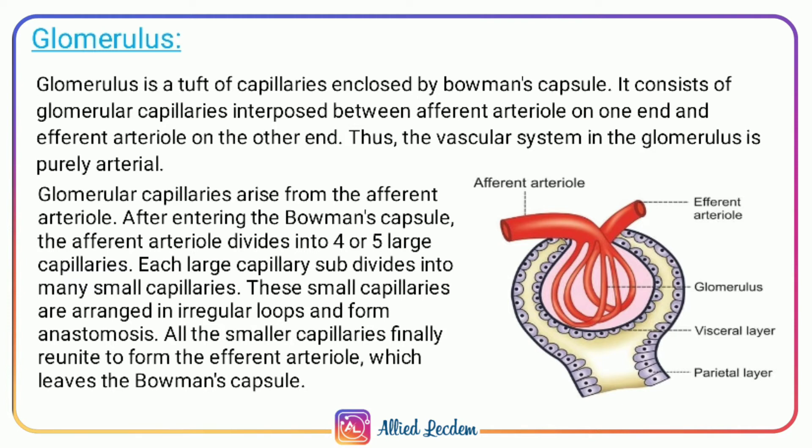The afferent arteriole divides into four or five large capillaries. The large capillaries subdivide into many small capillaries. The small capillaries are arranged in irregular loops and form anastomoses. When leaving the Bowman's capsule, all the small capillaries finally reunite to form the efferent arteriole.